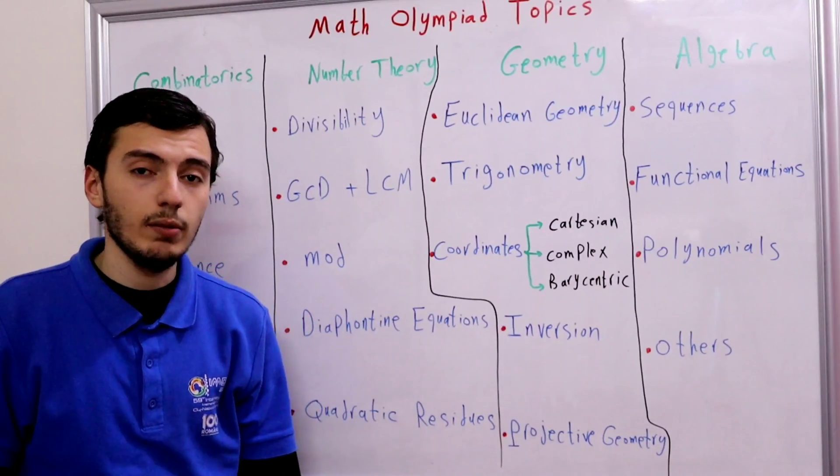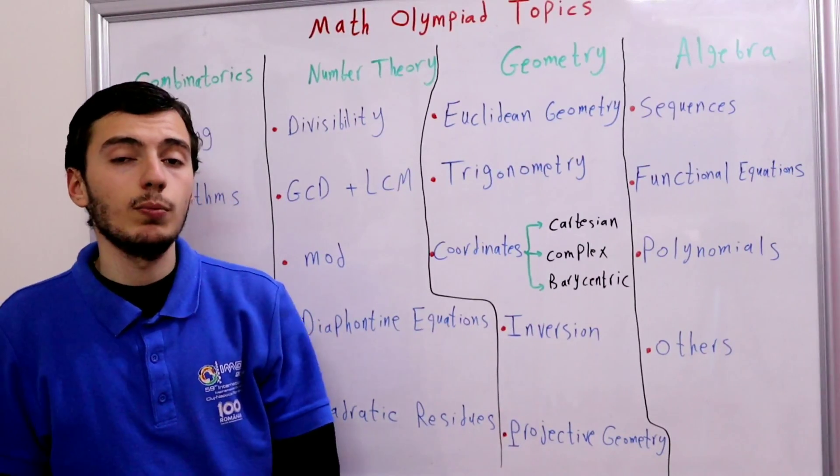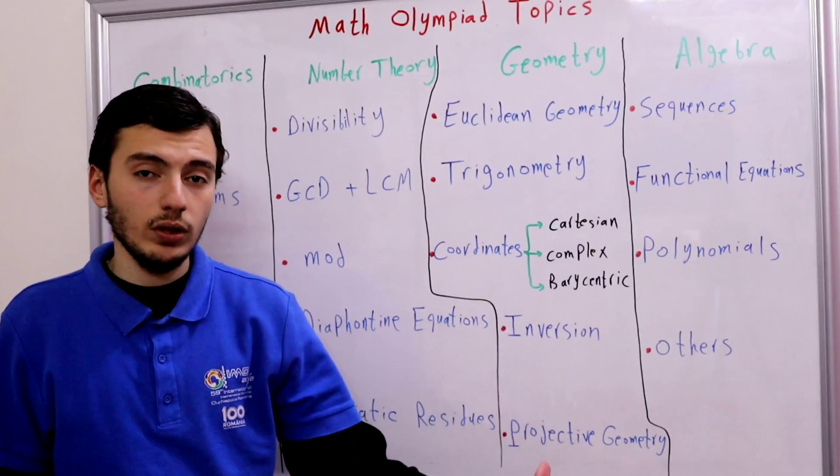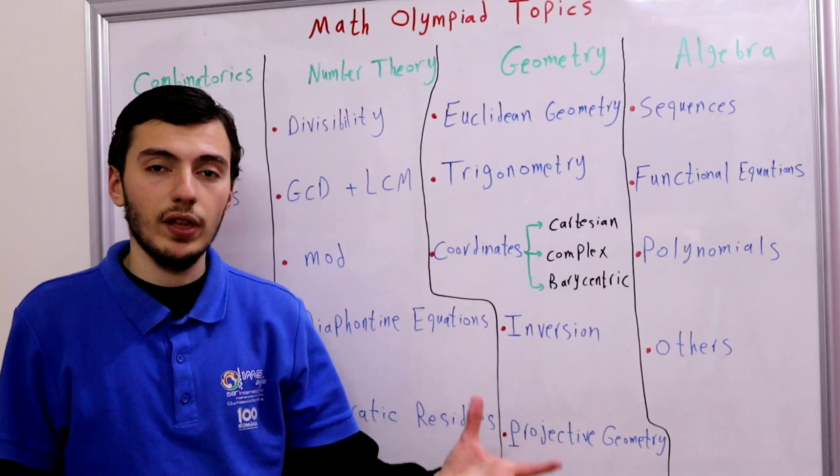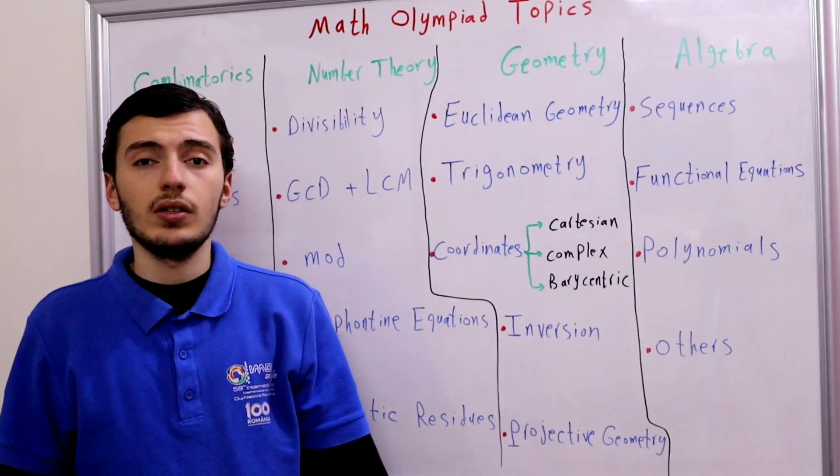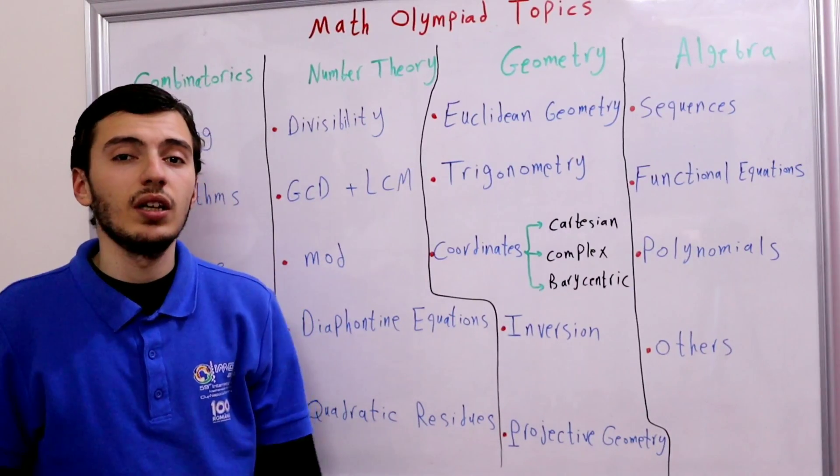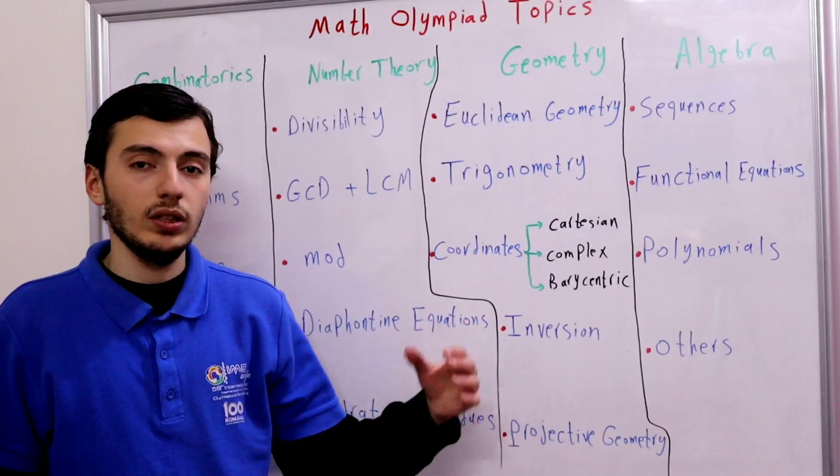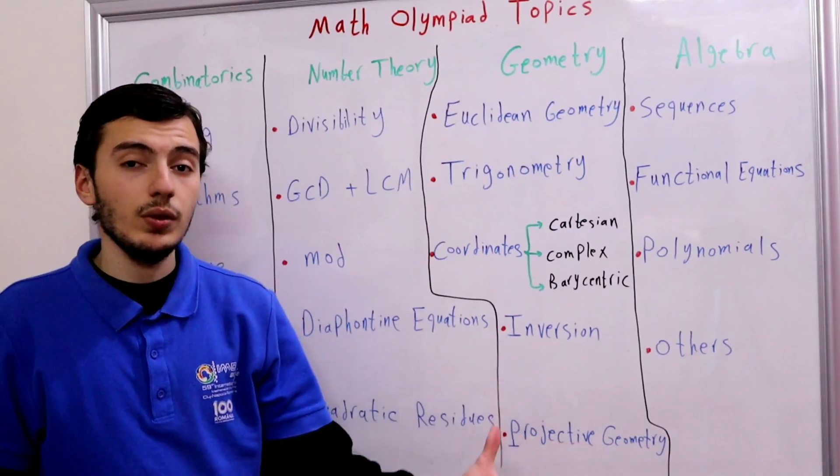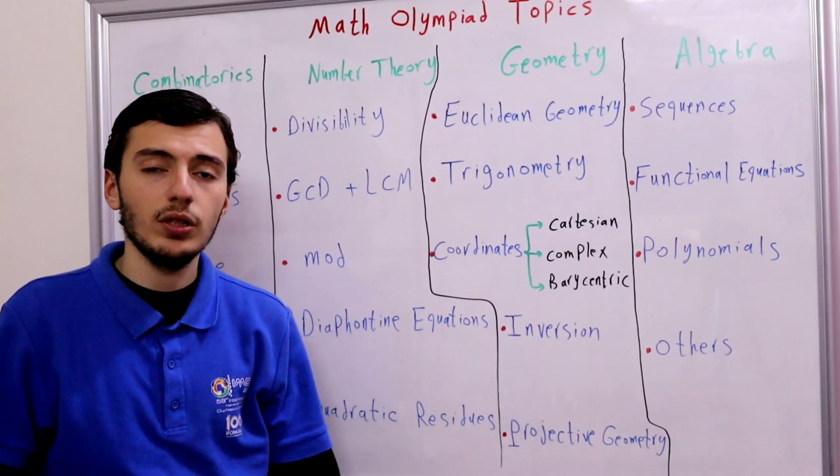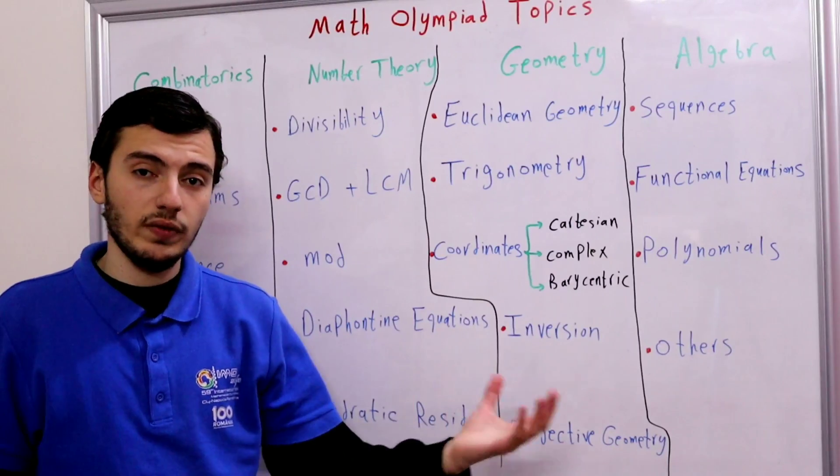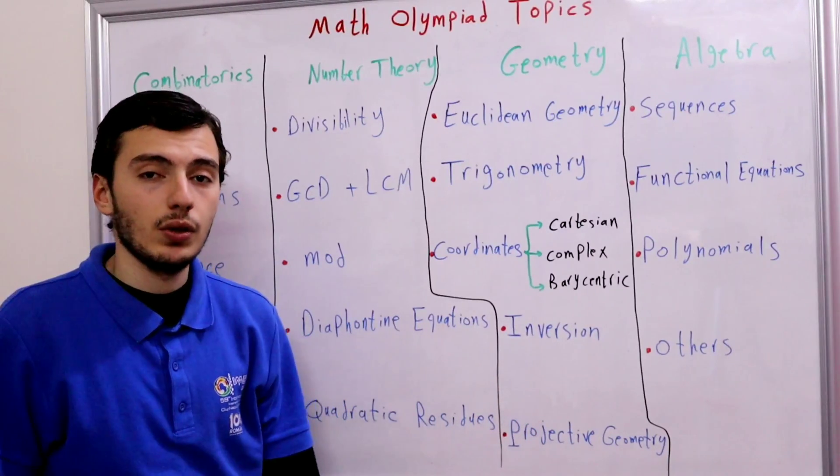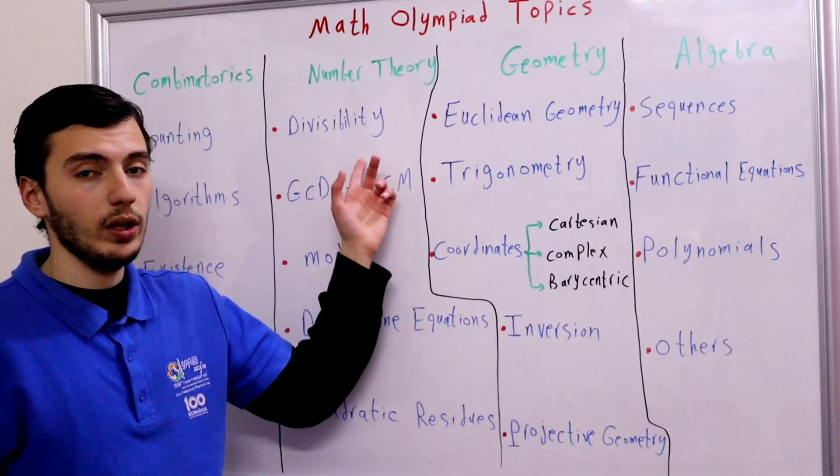The case here in Math Olympiad is to prove some complex quantities, the divisibility of them. So for example you were given some A times B plus C divides some other quantities and you need to know how to deal with the properties of divisibility itself. So you should be preparing this kind of problems very well.